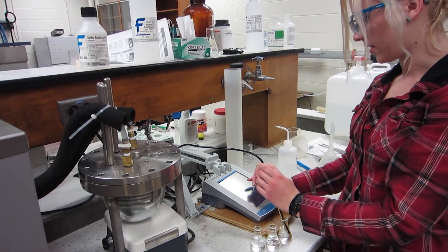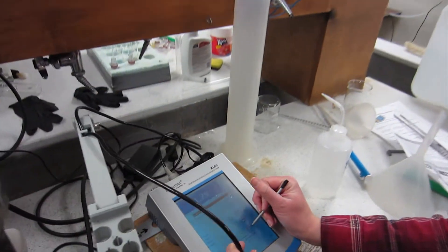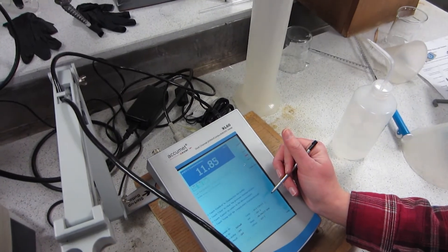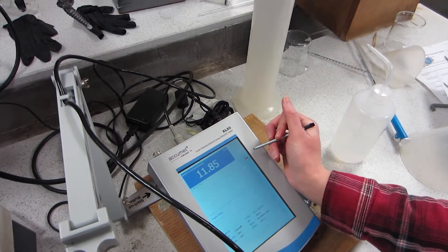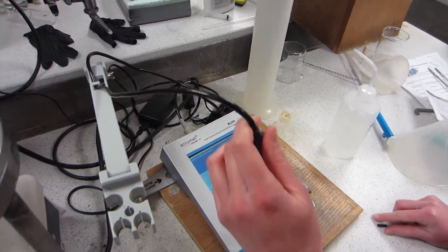Then hit confirm again. That's the 10 pH. So I entered that in, wait until it blinks at confirm, and now it's completely standardized and ready to go.